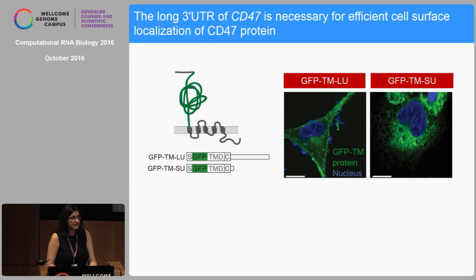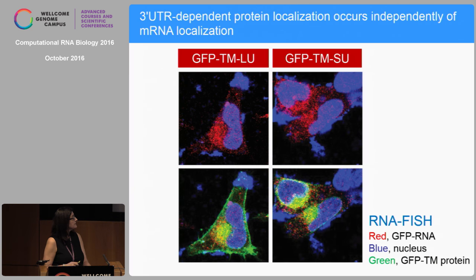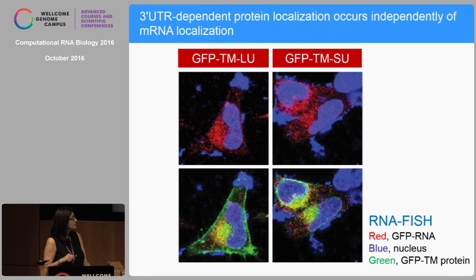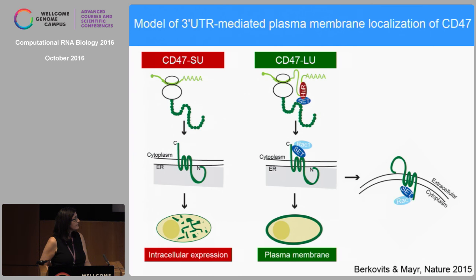Everyone knew that UTRs regulate mRNA localization, so we checked where the RNA was localized using RNA FISH. There is no difference in RNA localization — in both cases, the RNA is localized perinuclear. But when we look at the protein, GFP made from the short 3' UTR is localized intracellularly where the RNA is, while CD47 with a long 3' UTR is also localized at the plasma membrane. In the beginning, this was a real mystery, but it was not so hard to solve.